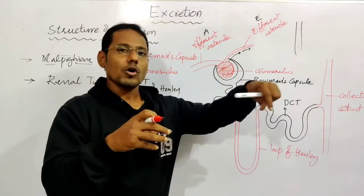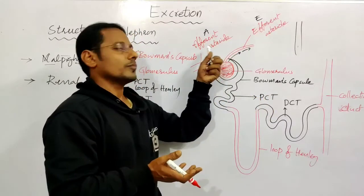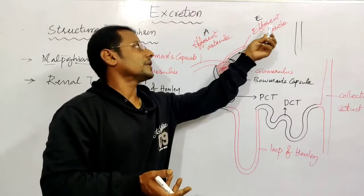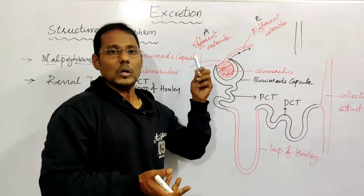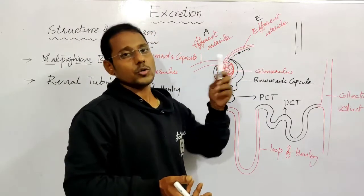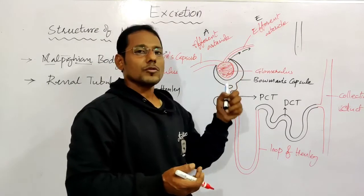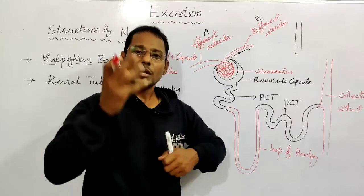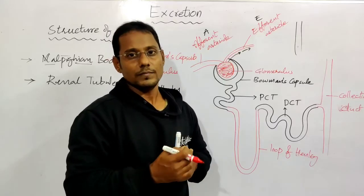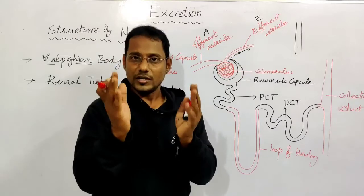If we have a full water pipe and apply pressure on the water, pressure is created. Similarly here, the afferent arteriole has a larger diameter than the efferent arteriole. Because the efferent arteriole is narrower than the afferent arteriole, pressure is created in the blood capillaries of the glomerulus, which helps in filtration.